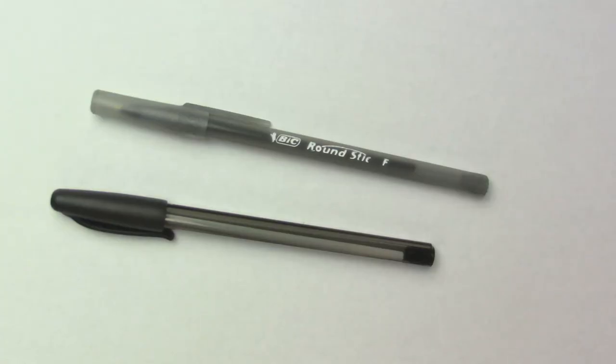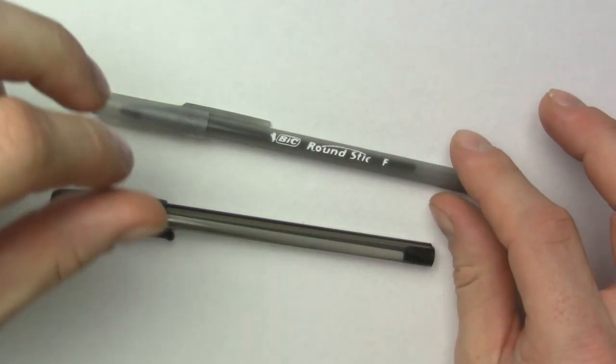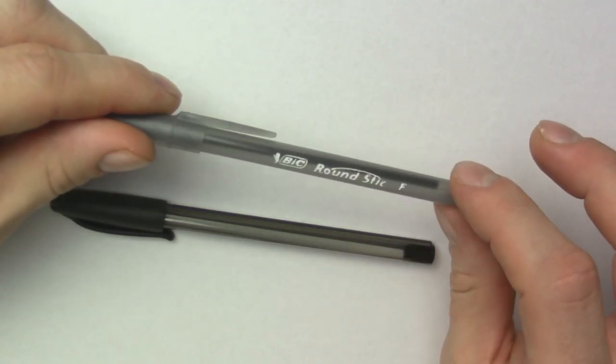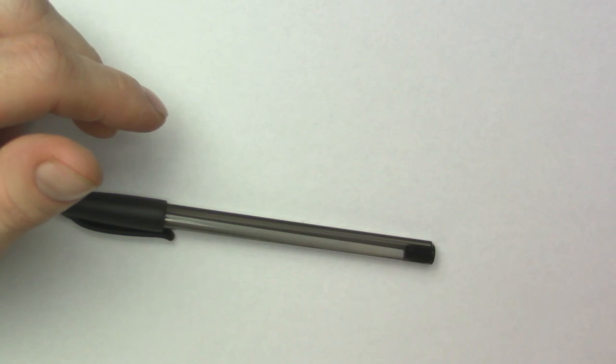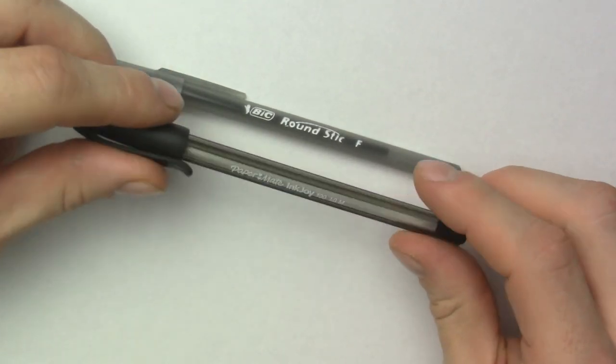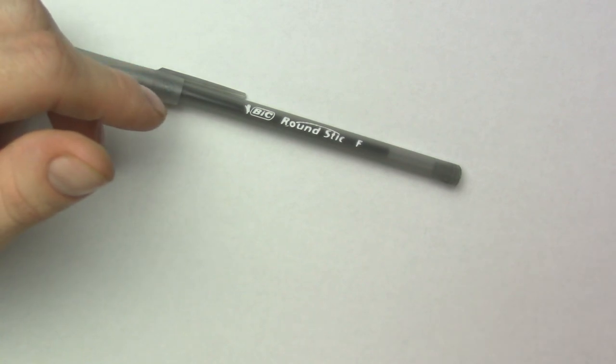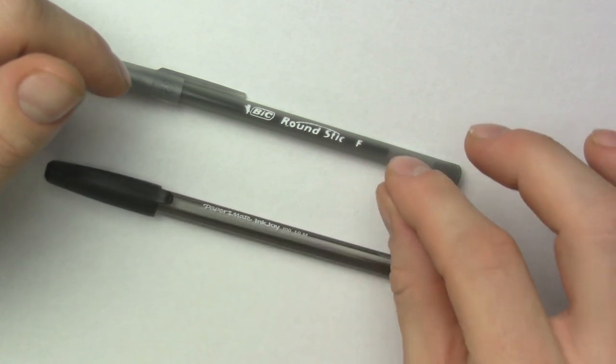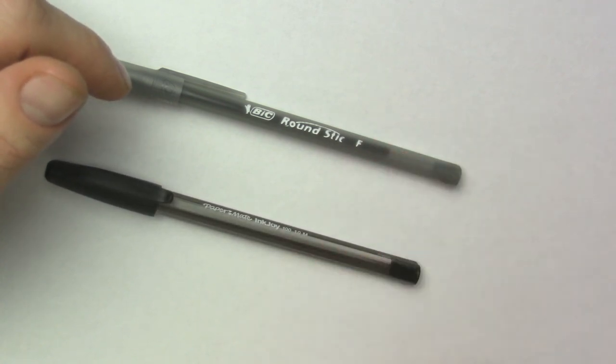Hello and today we're going to be comparing two pens that are kind of rivals in a way, one being the BIC Round Stick pen and the other one being this Papermate InkJoy. I will be talking about some of the differences between these pens, some similarities and what makes one of these pens better than the other one. What are their strengths and what are their weaknesses?